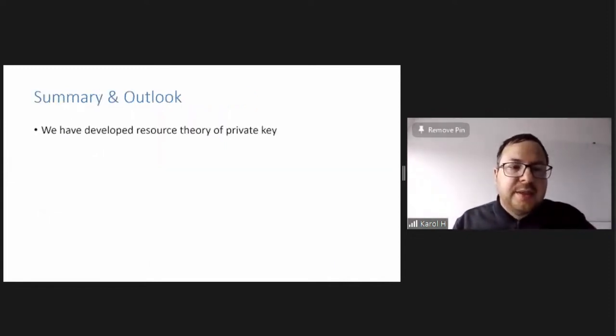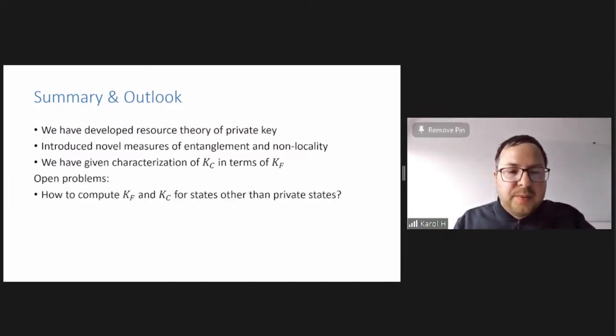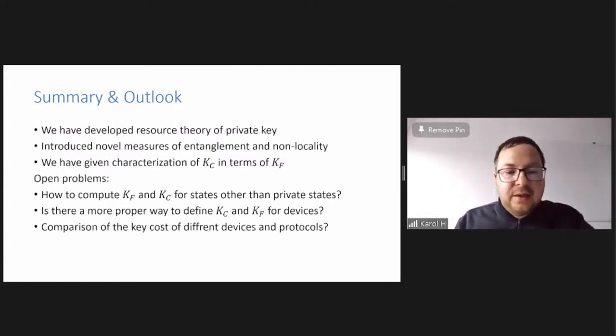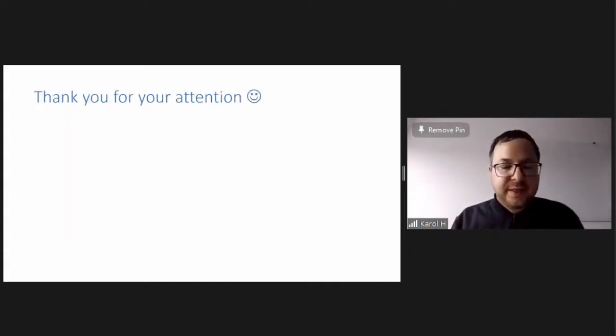So this is the summary. We have developed resource theory of private key, introduced novel measures of entanglement and non-locality. We have given characterization. And there are open problems. So how to compute secret KF and KC for other states than private states? That's a big question. Is there a more proper way to define them for devices? You can do it maybe a different way. And maybe it's interesting to compare like different devices, protocols and scenarios regarding how much they cost in terms of secret key. With that, I would like to thank you for your attention.